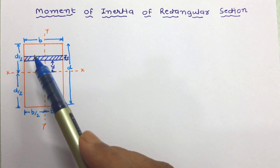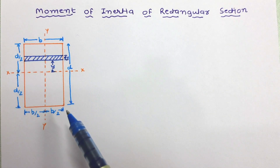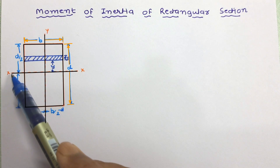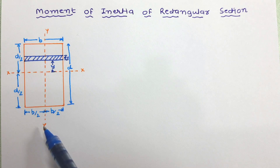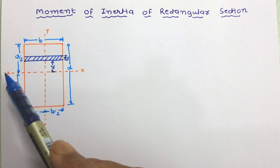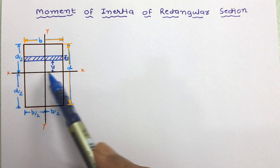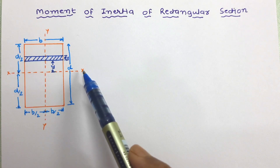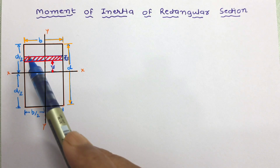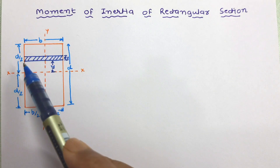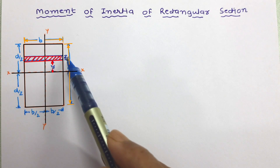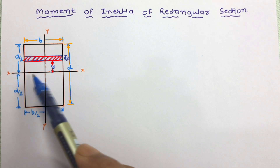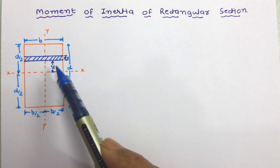This is a rectangle which is having width b and depth d. This is the centroidal axis XX and this axis is centroidal axis YY. Now we want to work out the moment of inertia of this rectangle about its centroidal axis XX. For that, consider a small strip of thickness dy, and the distance of the small strip from the centroidal axis is y.